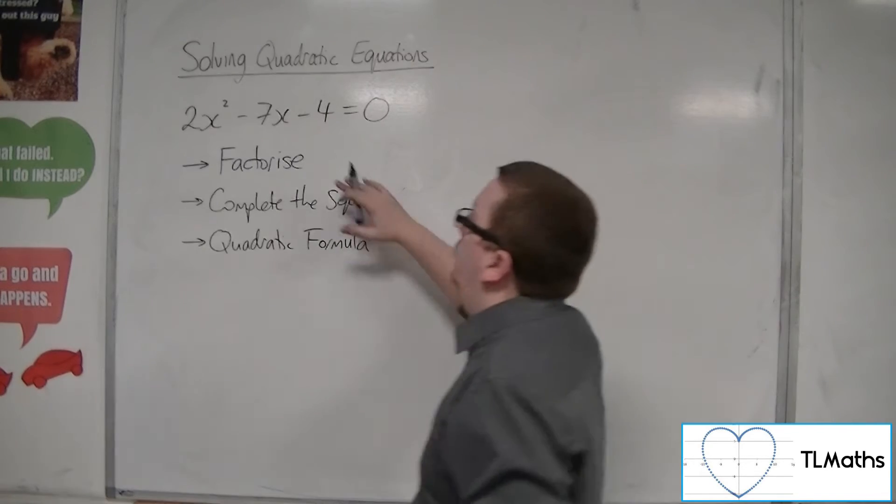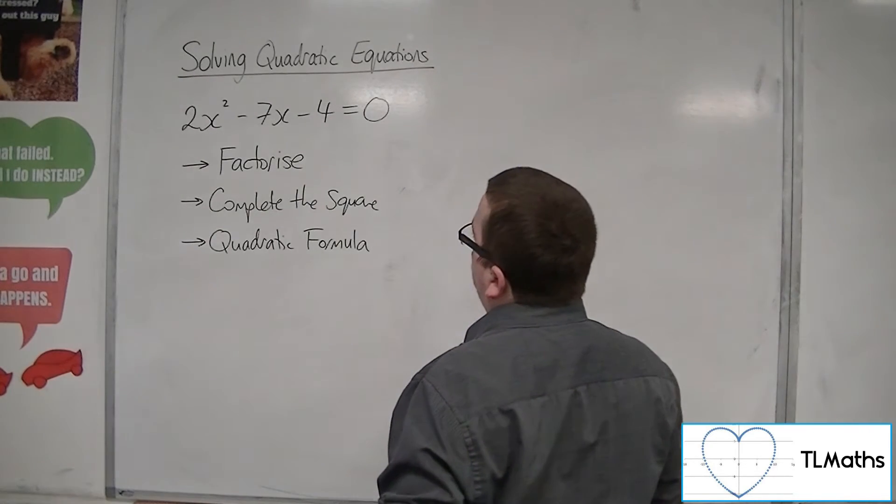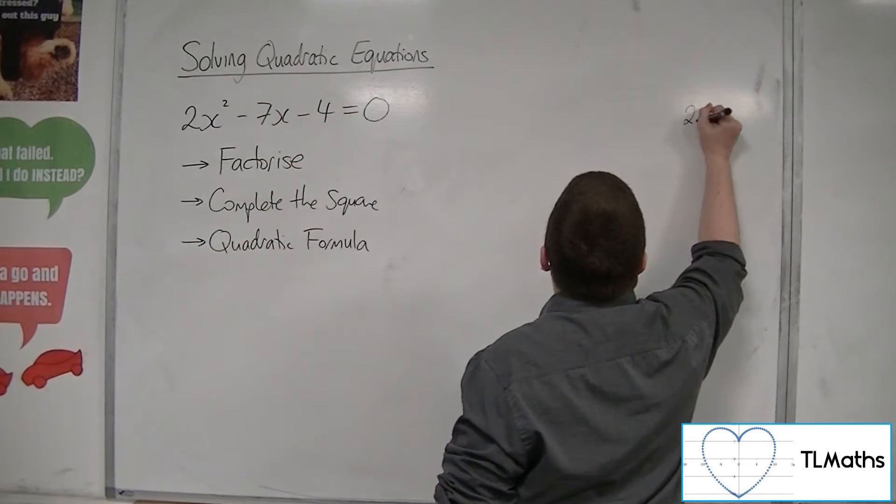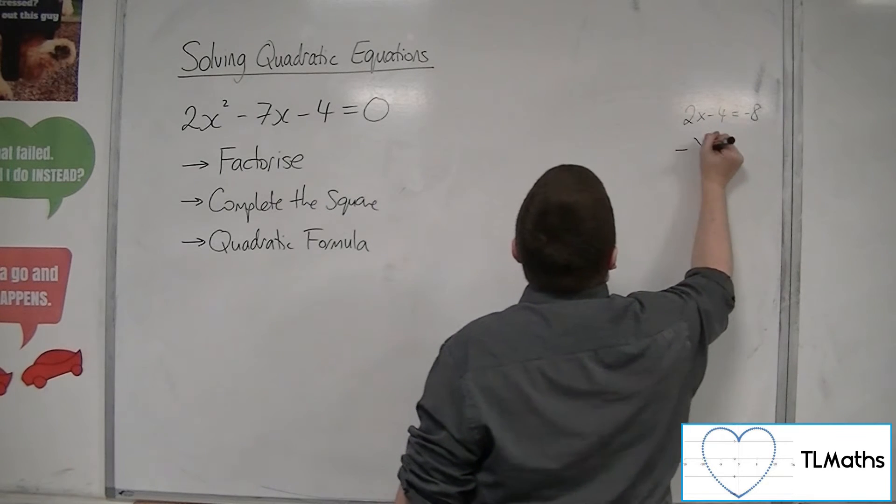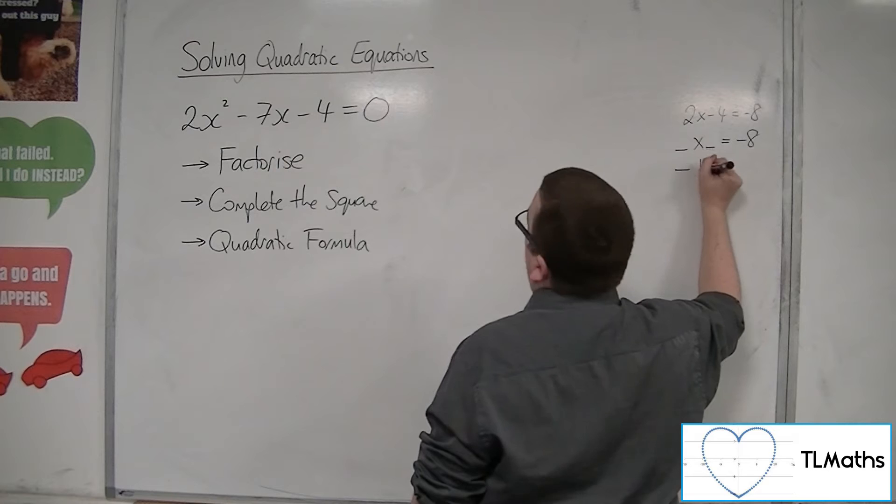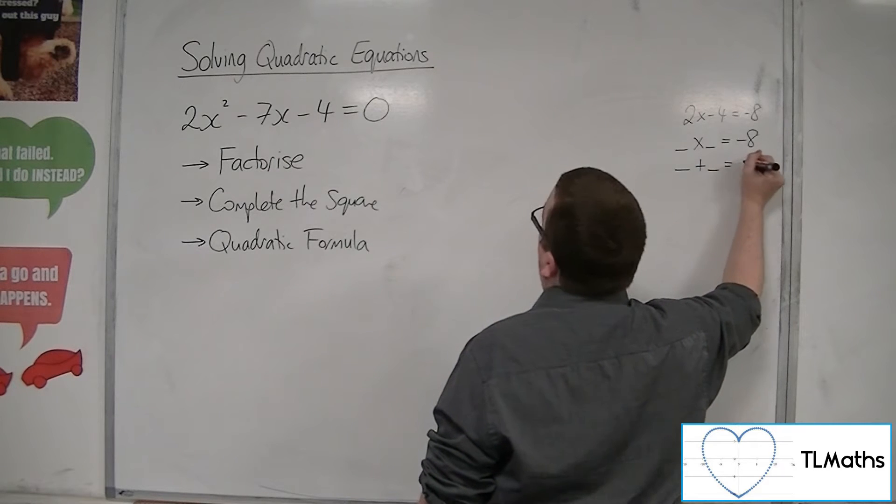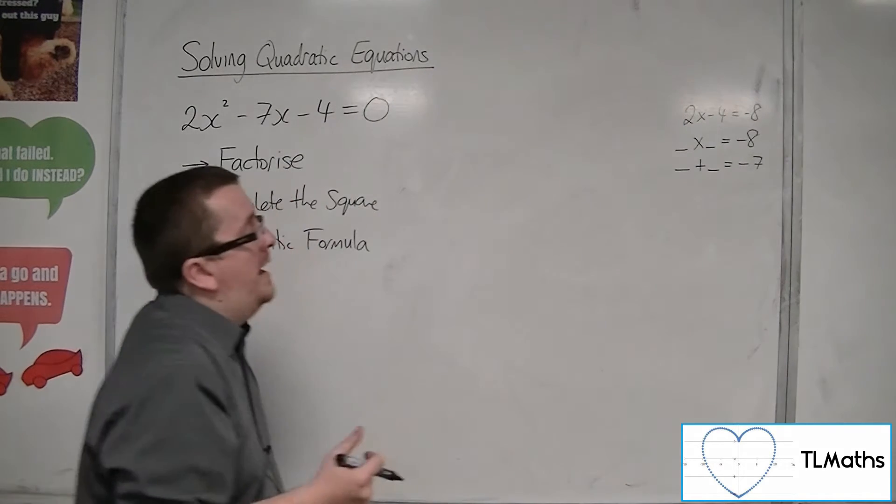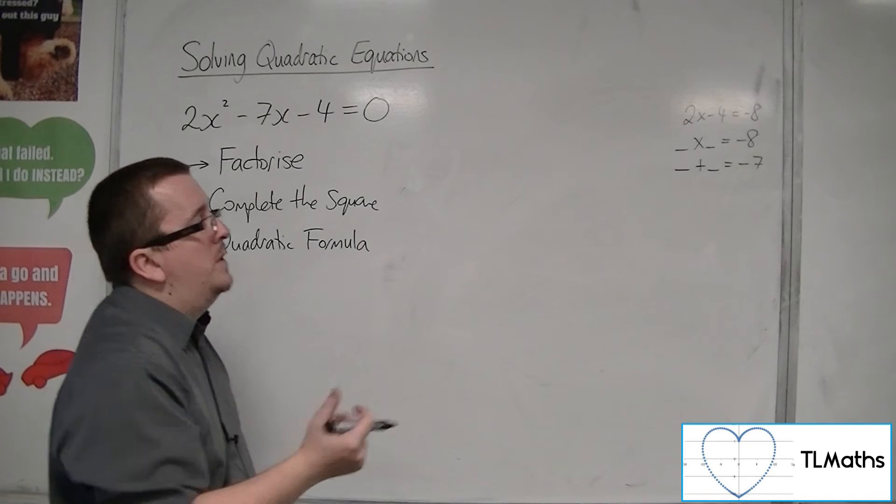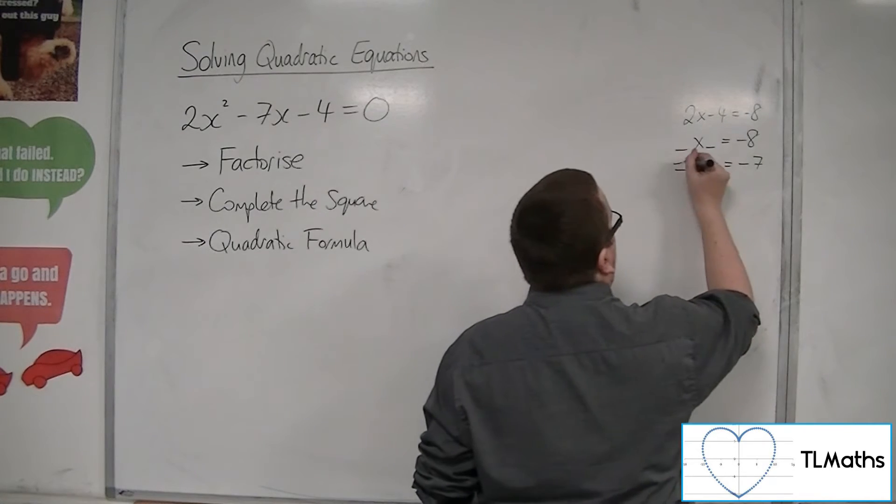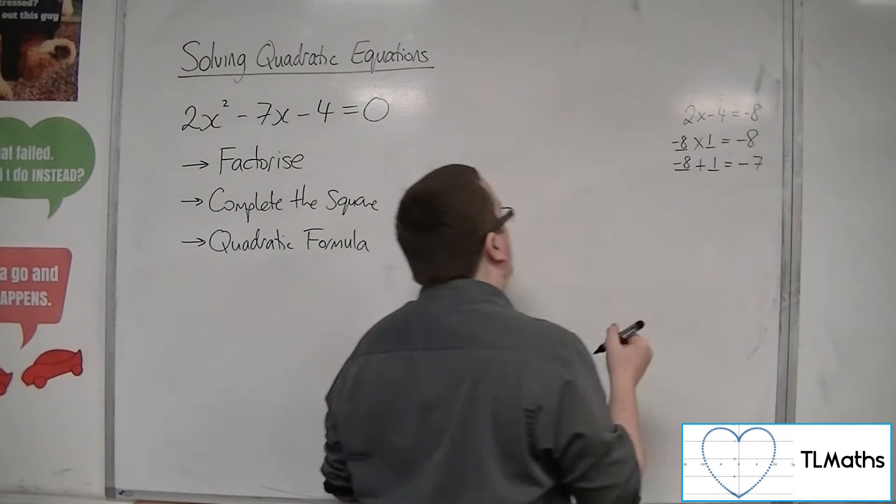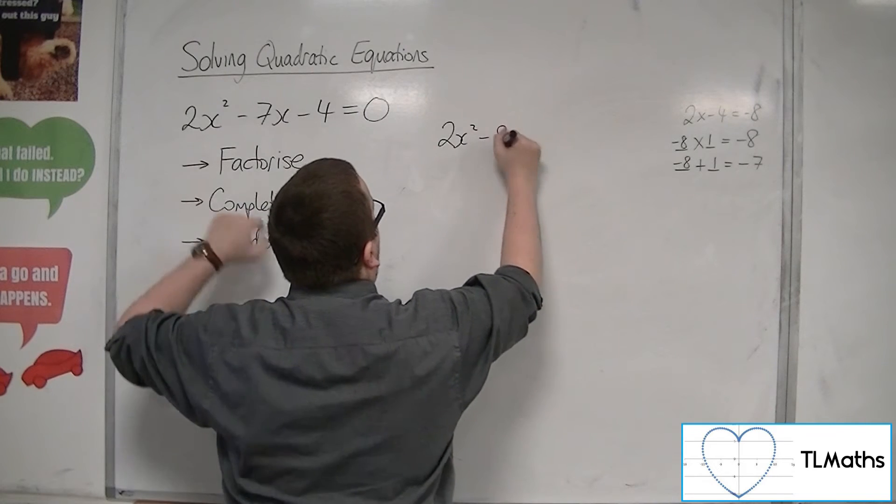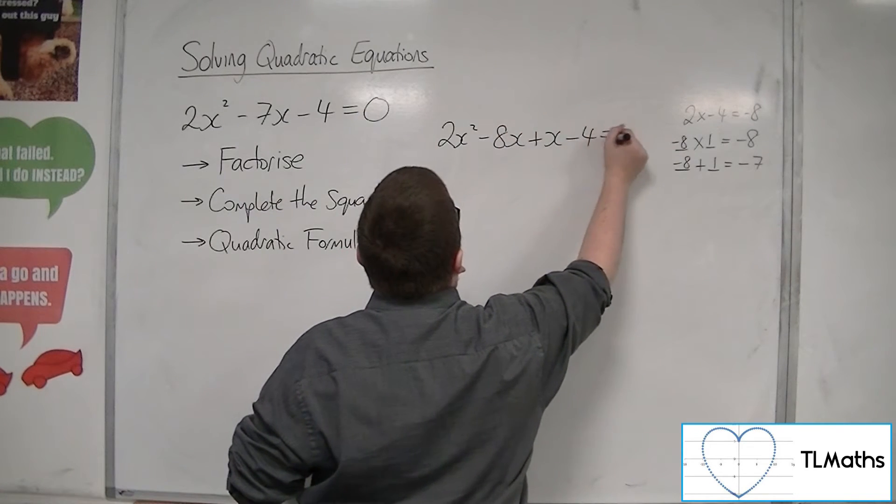So if I was to factorise this quadratic, then we can do 2 times the minus 4. So 2 times minus 4 gets me minus 8. We're looking for two numbers that multiply to make the minus 8 but add together to make the minus 7. So we could have minus 8 and plus 1.